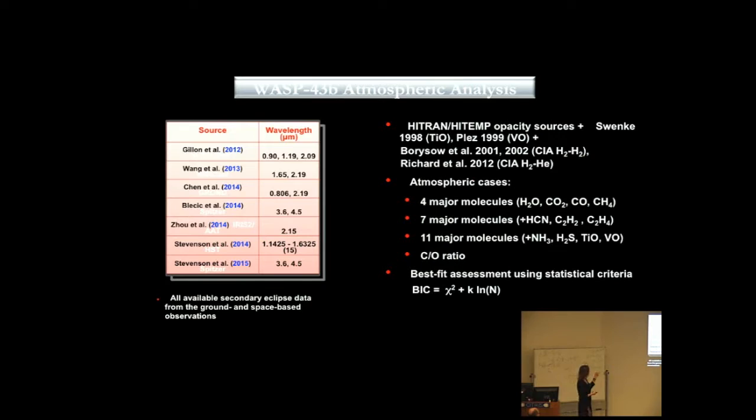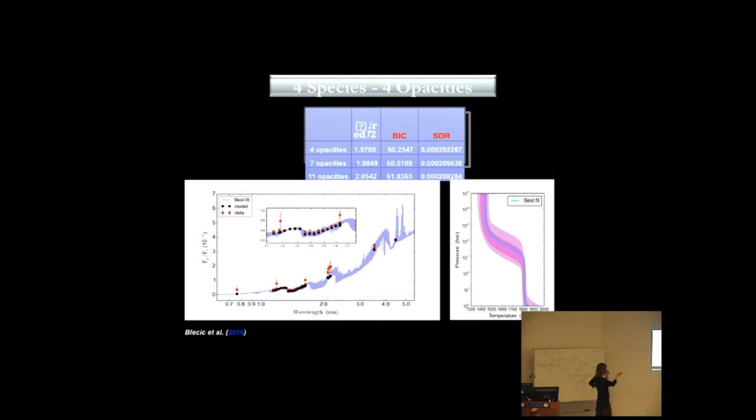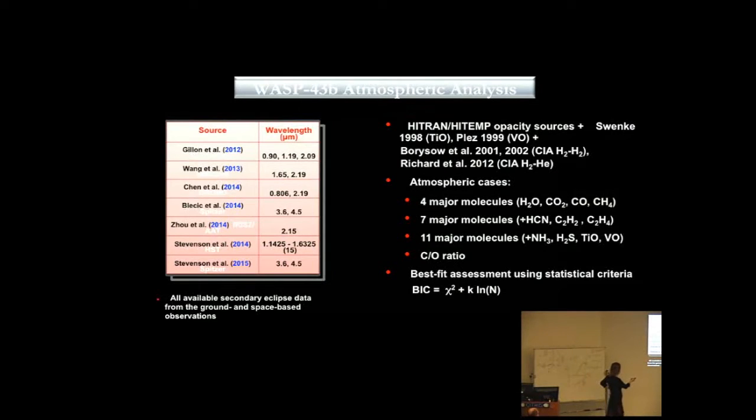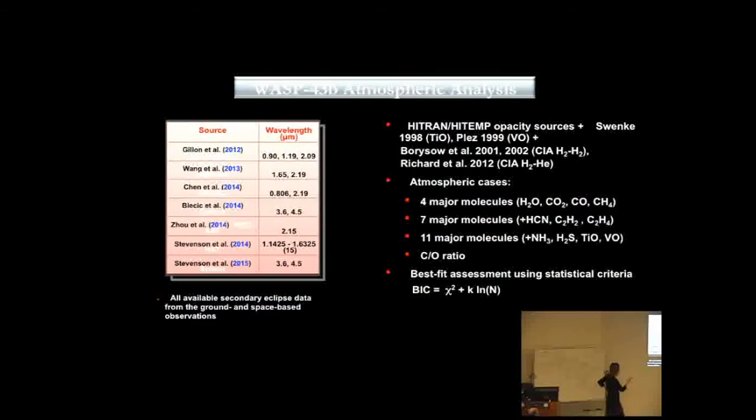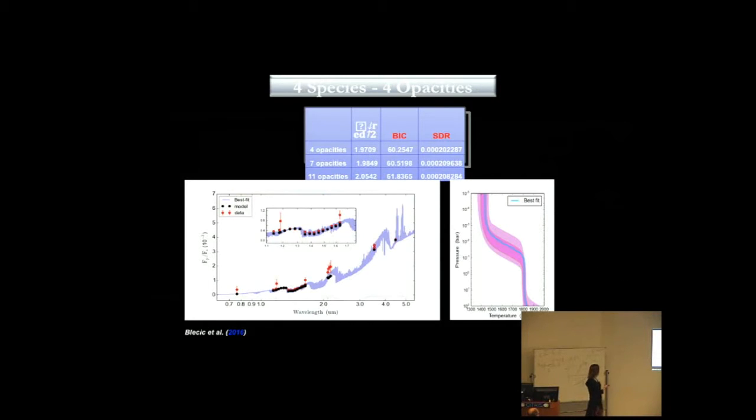This is the result of the atmospheric analysis of WASP-43b. I used 26 data points from high-resolution databases. These are the secondary eclipse data points. What I wanted to do is test several different cases, because people in the retrieval are using different approaches for how many molecules or opacity sources are put in the retrievals, and that can produce different results. I tried four molecules, seven molecules. These molecules are important when we have C to O ratio larger than one, and these when we have thermal inversion. I used statistical criteria to assess the best fit. I'm showing you here only the case when I have four species.